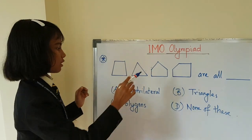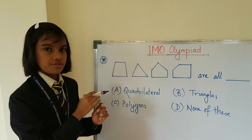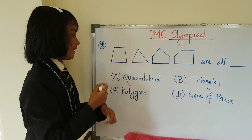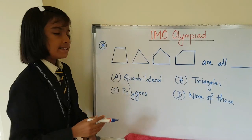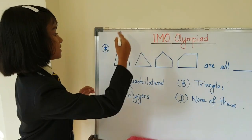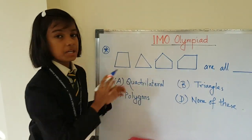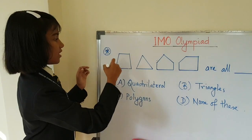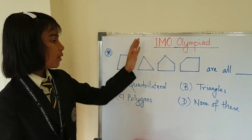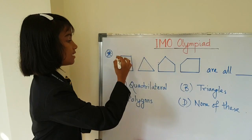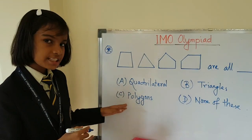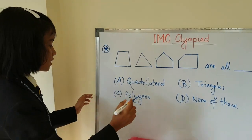These are not triangles either, because there is only one triangle. Then — polygons. It will be polygons, because these shapes are made up of straight lines and they are closed. So the answer is C — polygons.